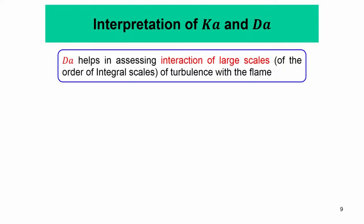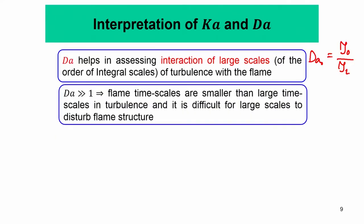A few comments on the interpretation of the Karlovitz number and the Damköhler number. The Damköhler number helps in assessing the interaction of large scales of turbulence with the flame. The flame Damköhler number is essentially given by tau_integral divided by tau_flame (tau_L). Damköhler number greater than 1 means that the flame time scales are smaller than the large turbulent time scales, and it is difficult for large scales to disturb the flame structure.